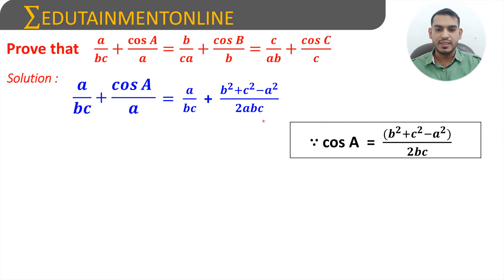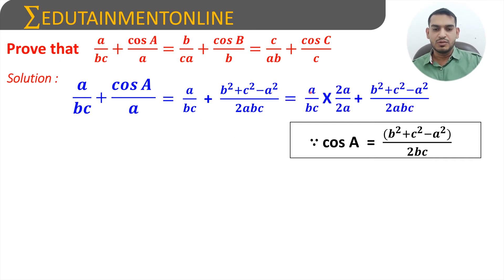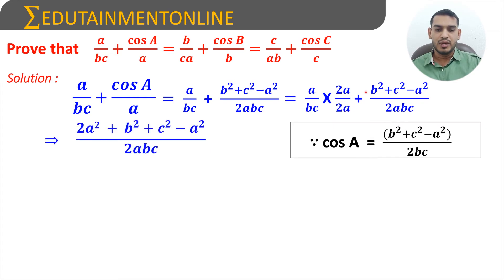The denominators are bc and 2abc. We multiply and divide the first term by 2a so that the denominators become equal. That gives us 2a² / 2abc + (b² + c² - a²) / 2abc. With a common denominator of 2abc, the numerator becomes 2a² + b² + c² - a². Since 2a² - a² = a², this simplifies to (a² + b² + c²) / 2abc.